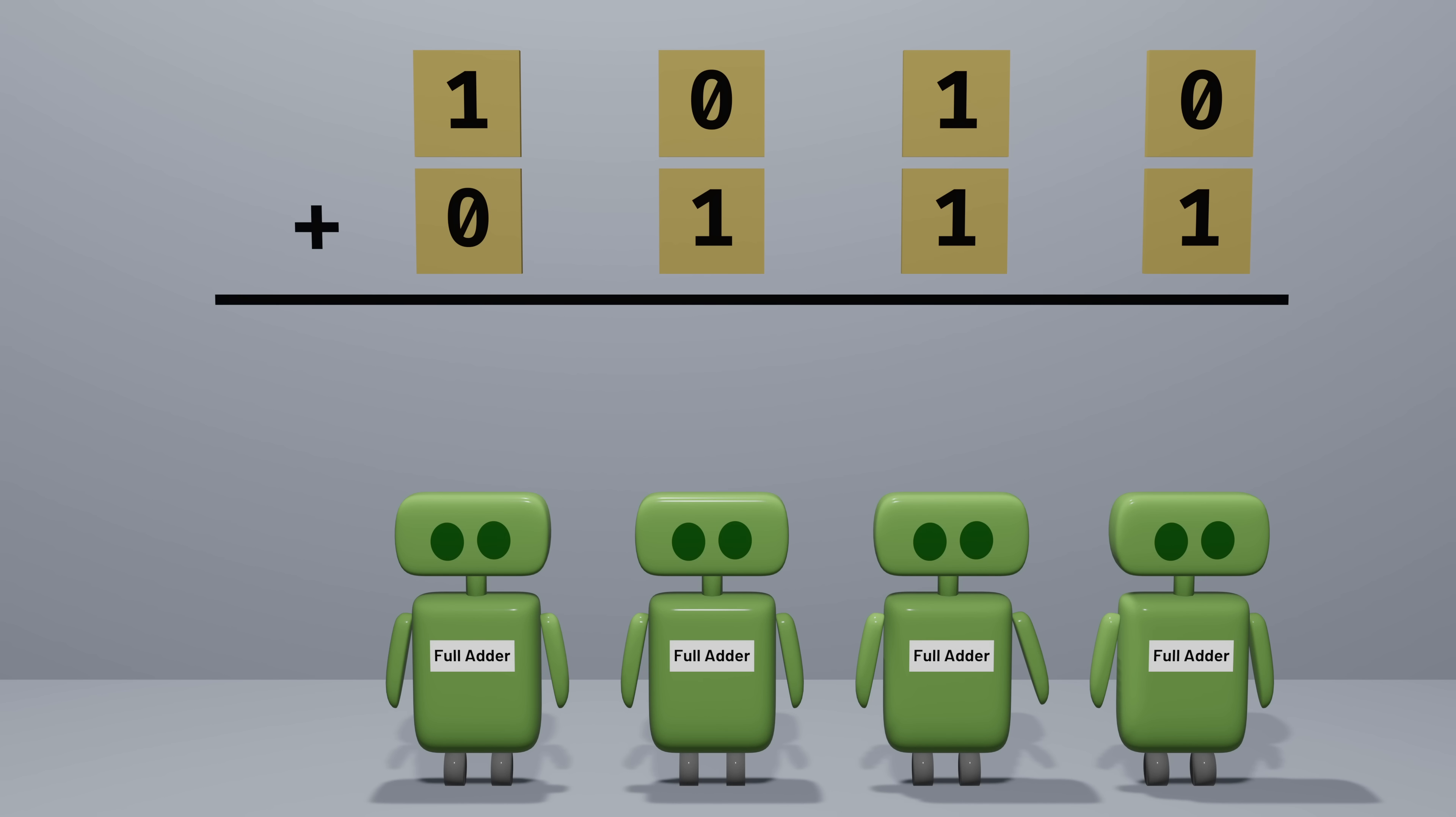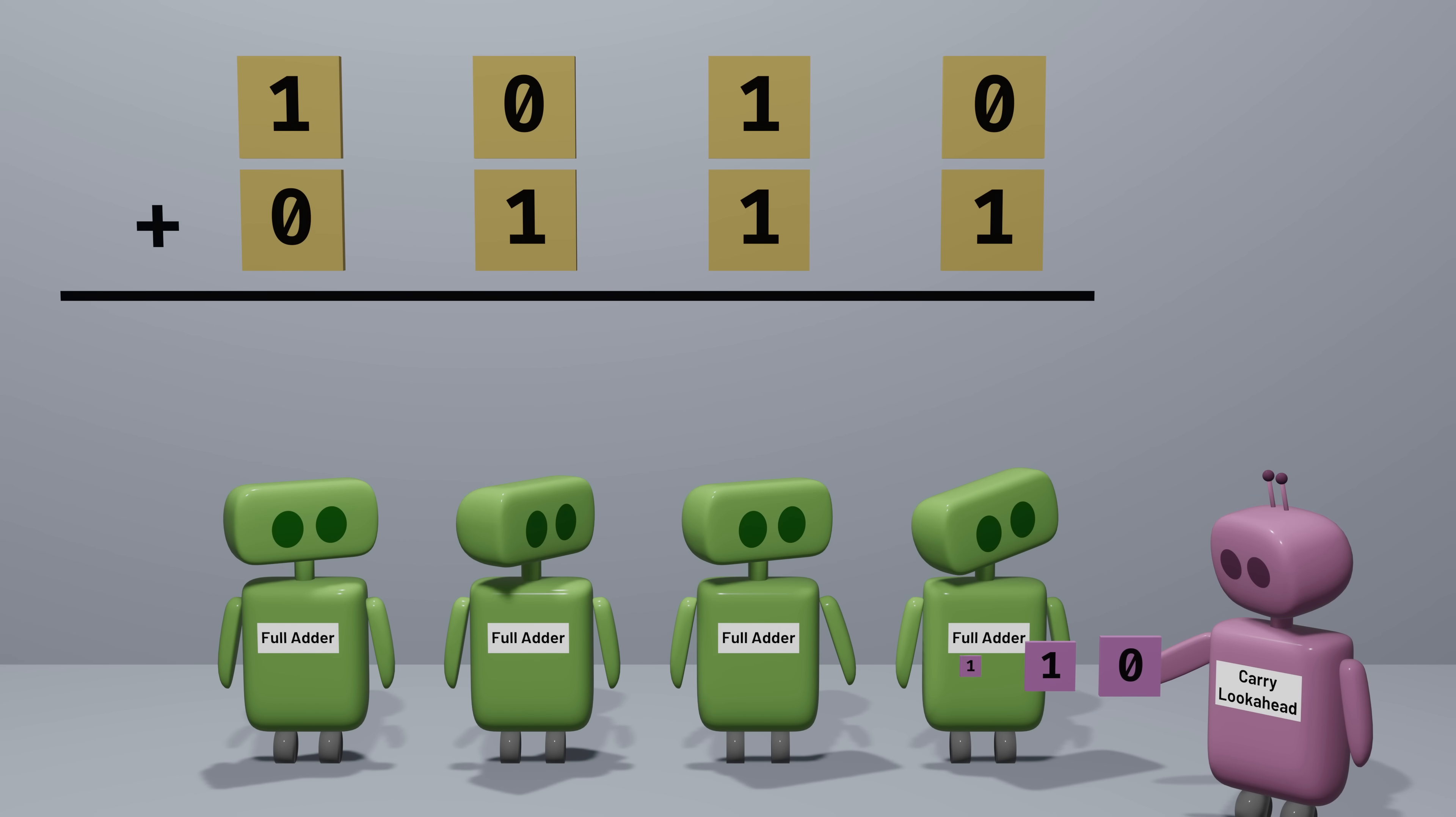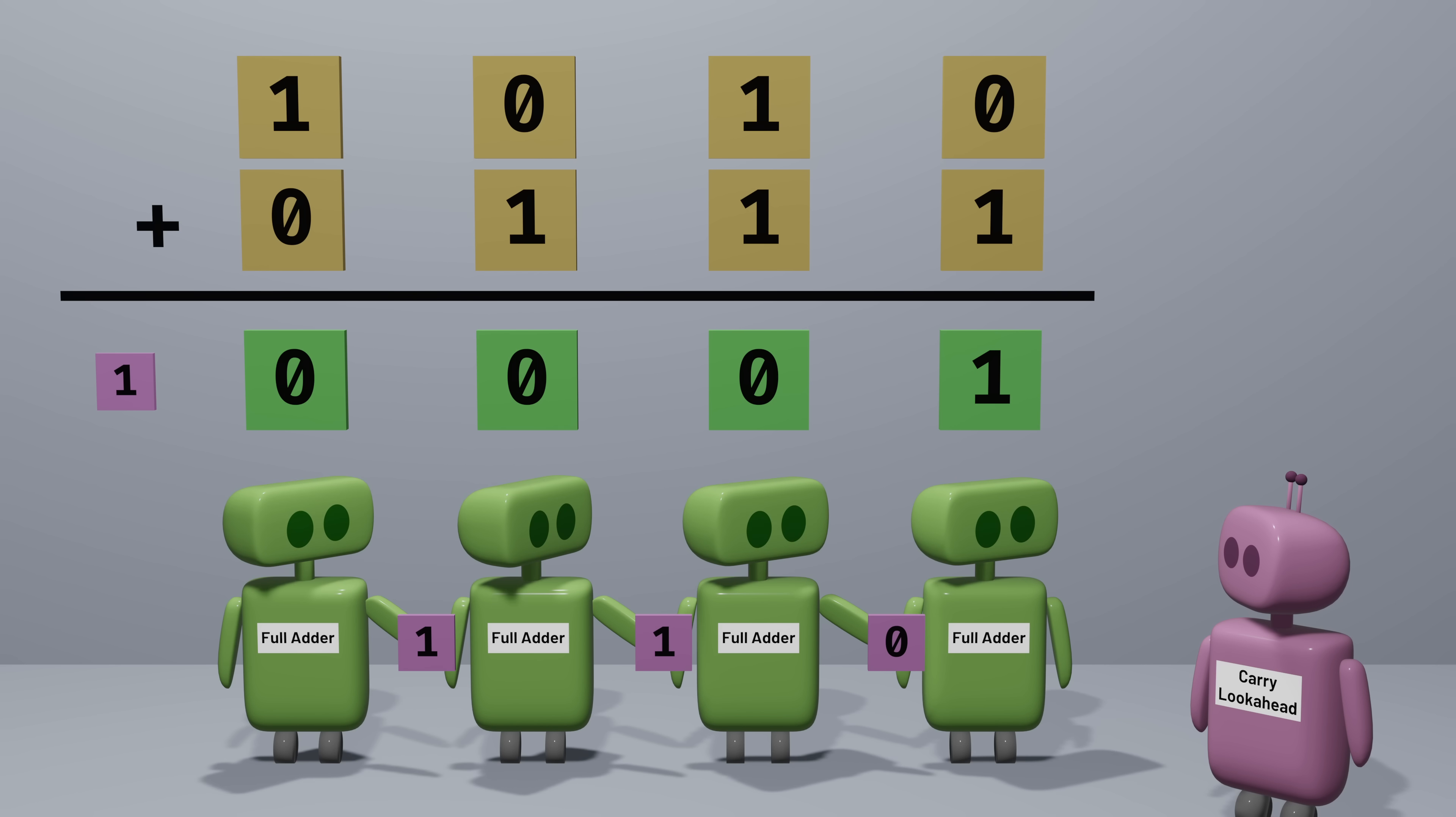In a carry lookahead adder, the basic idea is to add logic that calculates all of the carries quickly and at the same time, and then passes them on to the adders that need them. That lets the individual single-bit adders do their work without needing to wait for all of the previous adders. But how does that work? How can this carry lookahead adder know what all of the carries will be without actually doing the whole addition?